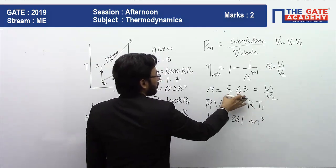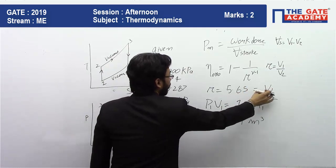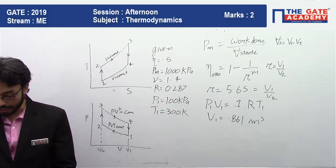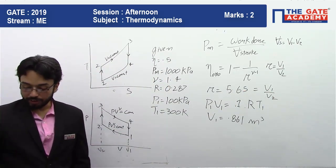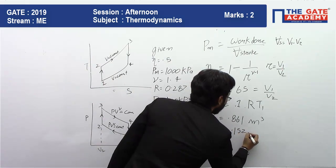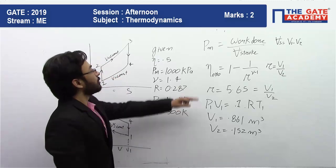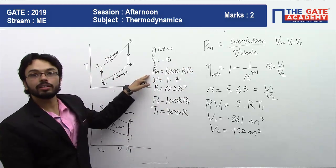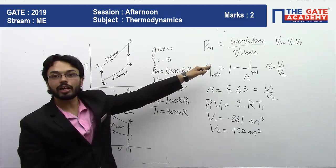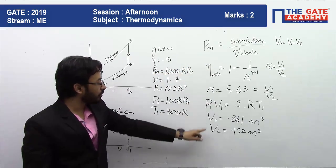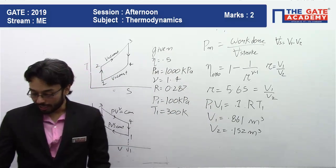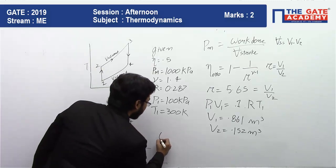Now that we have V1 = 0.861 m³ and we know r = V1/V2 = 5.65, we can easily calculate V2. V2 comes out as 0.152 m³. With Pm (mean effective pressure) given and the stroke volume V1 minus V2 now known, we can substitute to calculate the net work done.